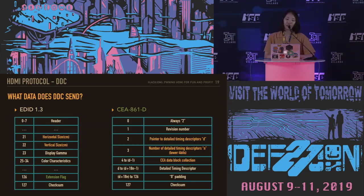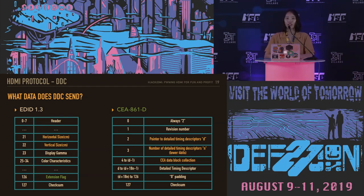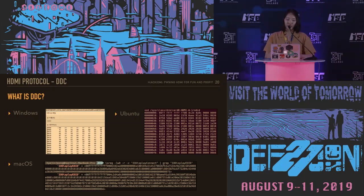The E-EDID data consists of EDID 1.3 and a CEA extension, and they have the following structures. Because data sent by the fuzzer is also this E-EDID data, we need to know a little about the data structure. EDID 1.3 includes information such as horizontal size, vertical size, and color characteristics. There is also an extension flag, which means that extension data follows the EDID structure. If you are not sure what EDID is yet, turn on your laptop — if it is connected to a TV or monitor with HDMI, you can probably find EDID data on it.